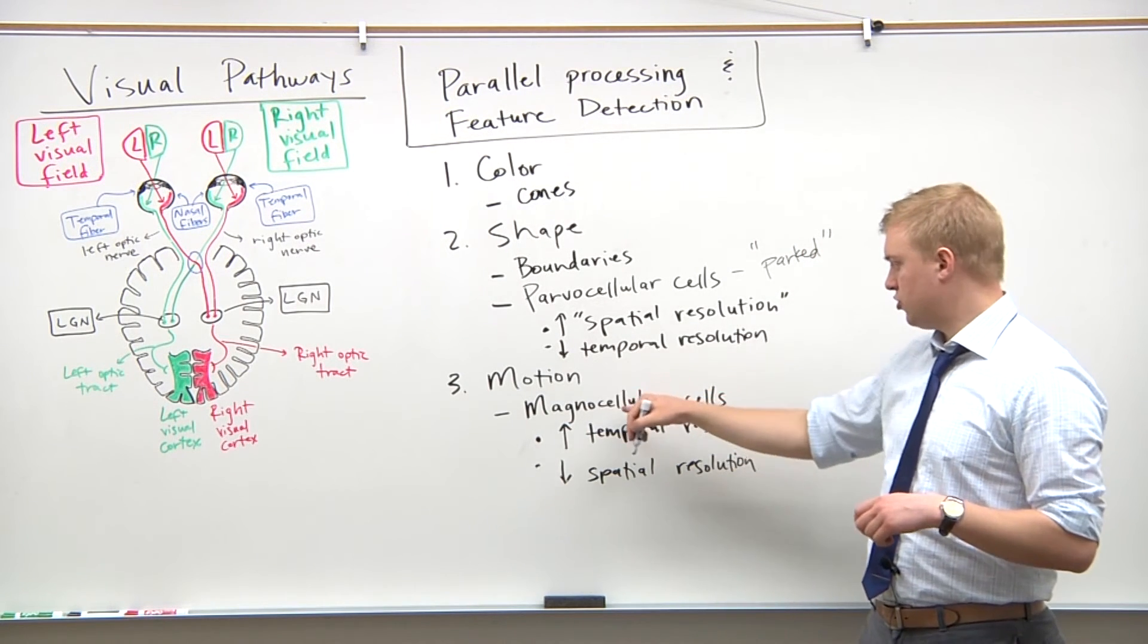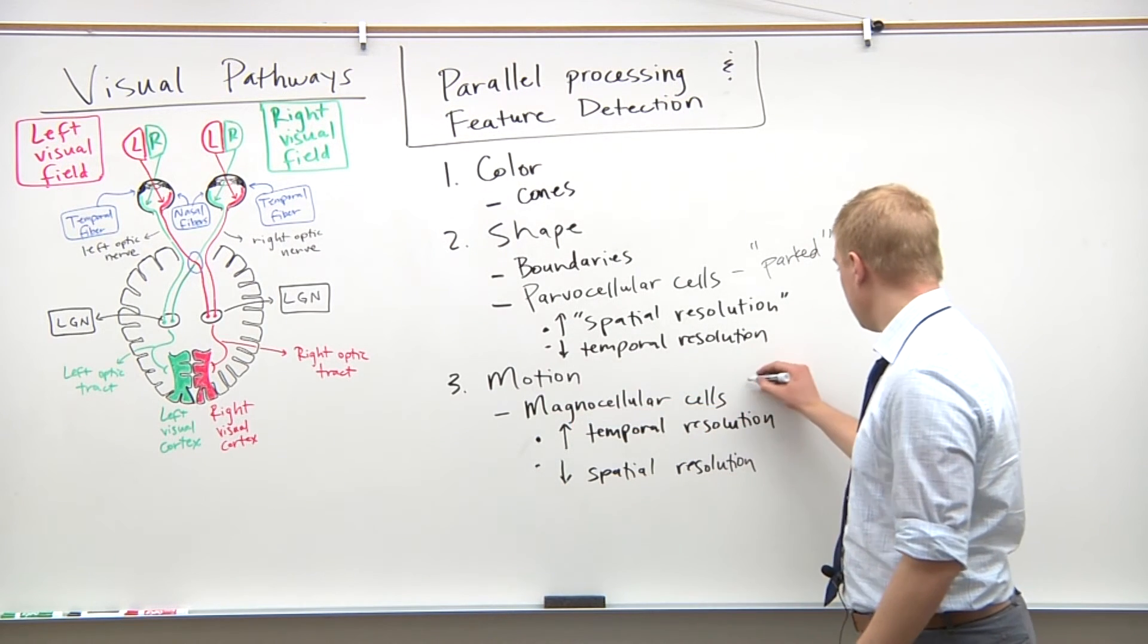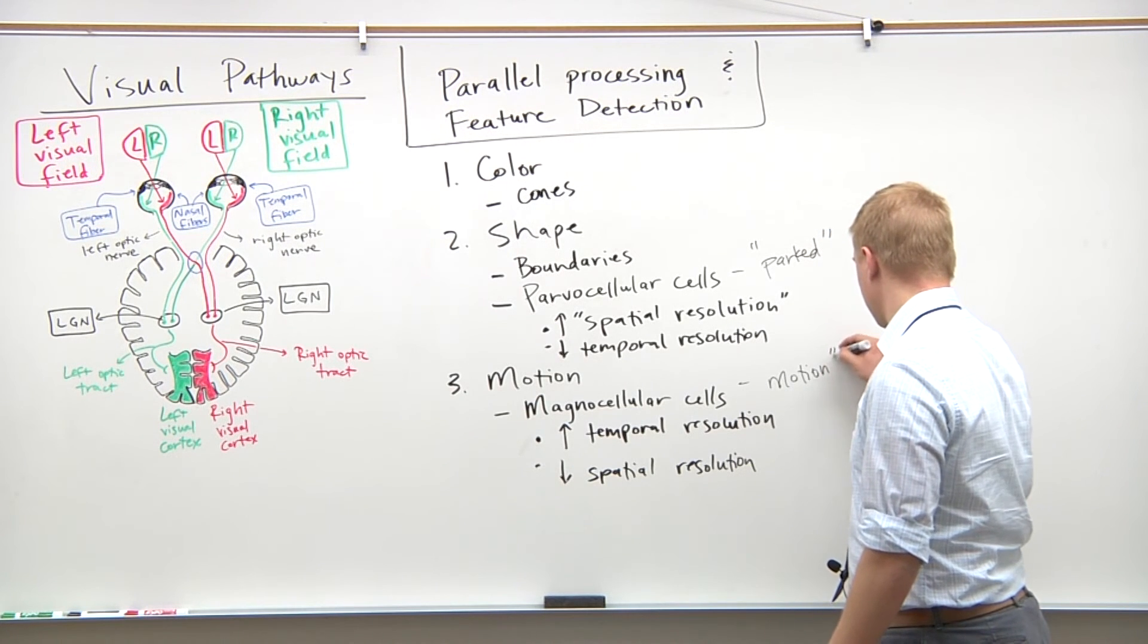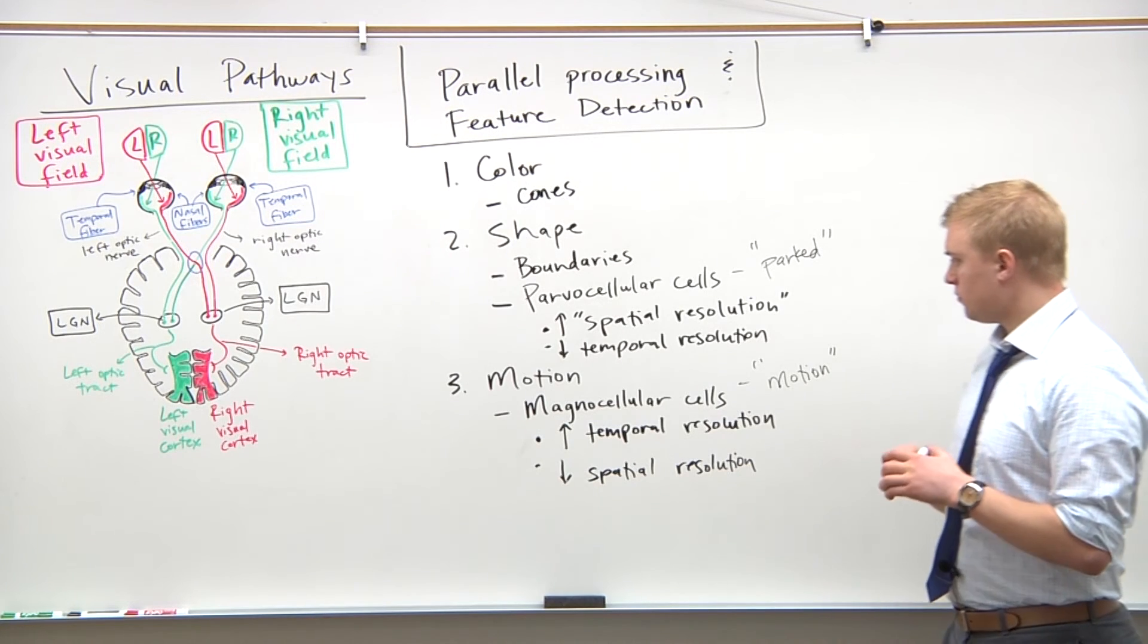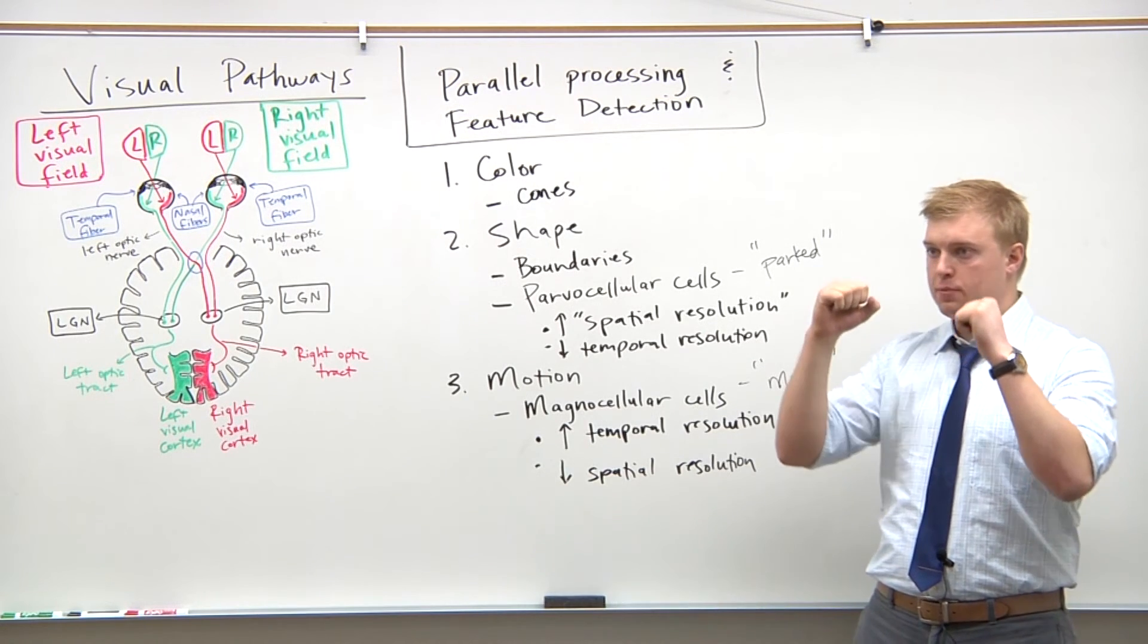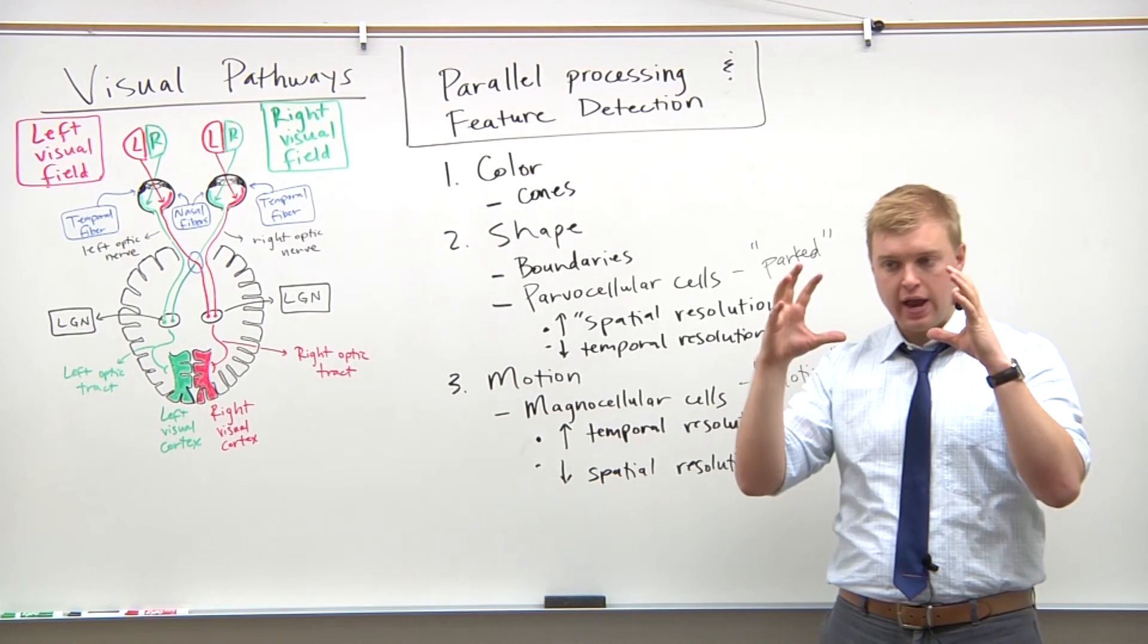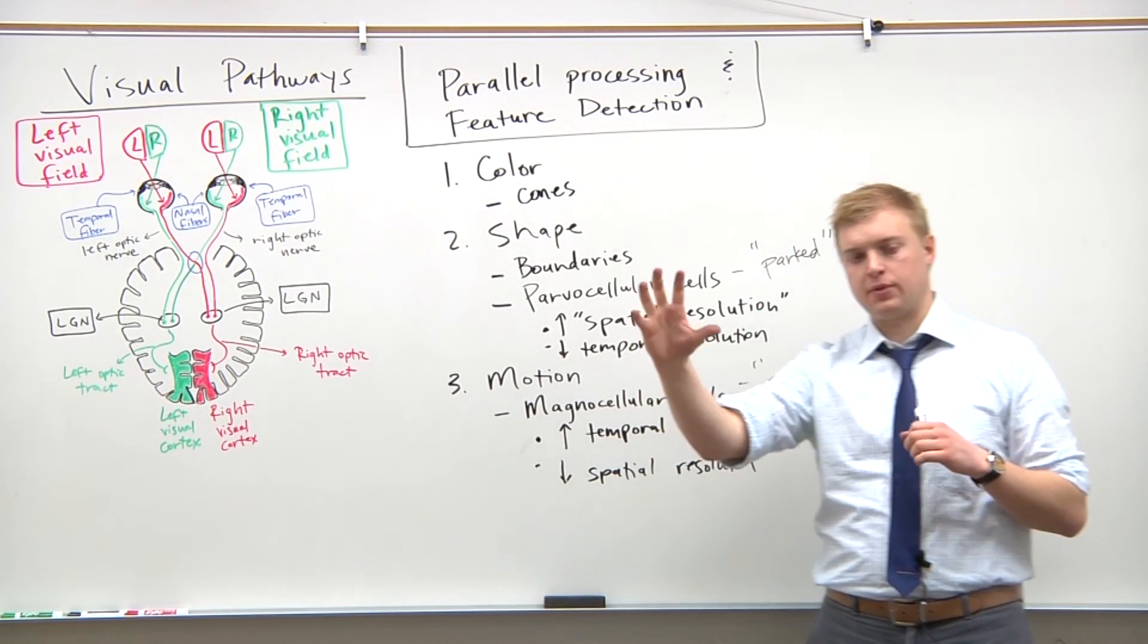Whereas for motion, you're using the magnocellular cells. Well, I think M for motion. So magno, just think motion. And again, if you're trying to film something that's moving, well even with a camera, you're going to be able to film the object but it won't be nearly as clear as if you were to have that camera on a tripod filming something that's not moving.